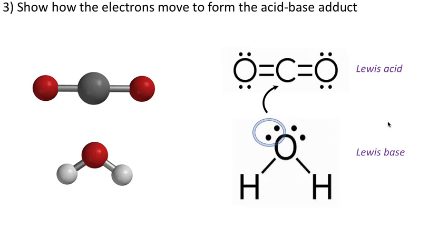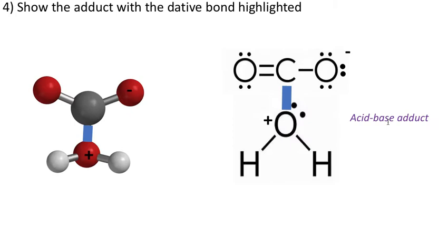If we're following the octet rule, that means a pair of electrons has to leave that bond, and the lone pair of electrons on the Lewis acid.